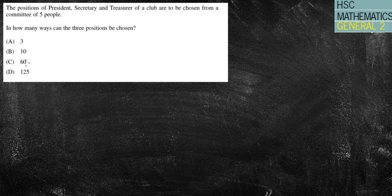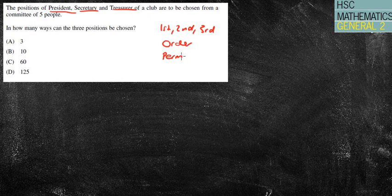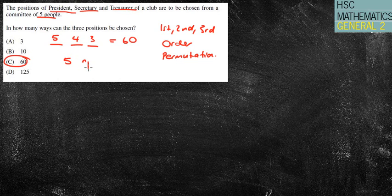Next question. The position of president, secretary, and treasurer. That's the same as having first, second, and third. Therefore, order matters. Therefore, it's a permutation, and I want to include all the results. Chosen from a committee of five people. How many ways can we choose this? Well, we've got three people being chosen, five people, then four people, then three people. So that's 20 times three is 60. So therefore, it's 60. Likewise, 5 NPR, 3 equals 60.